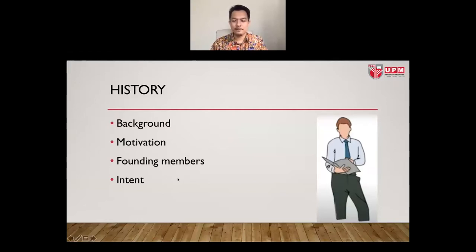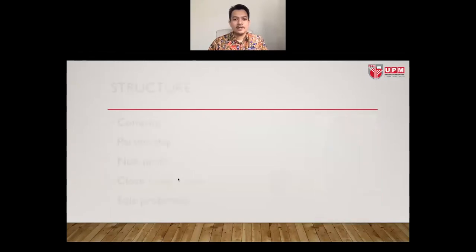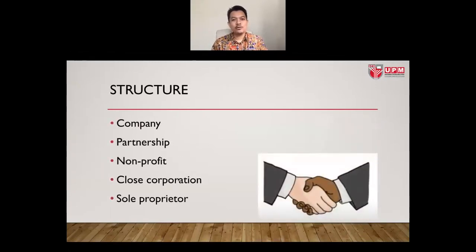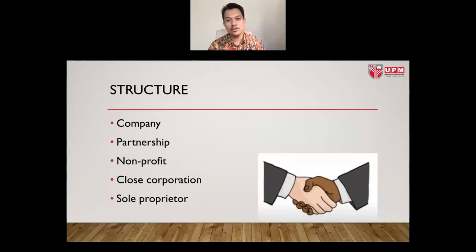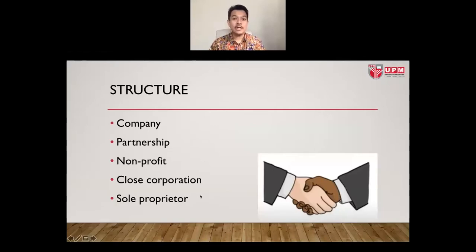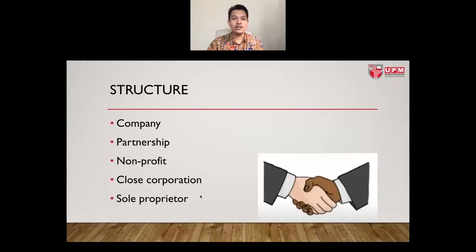Next, you can put the company structure — a simple organization chart. It doesn't have to be the whole chart; if you have two thousand employees, you don't have to put everything — just the key personnel. In terms of company type: is it a partnership, a non-profit, a close corporation, or a sole proprietor? Who owns the company — is it the directors themselves, or is there someone else behind it, such as a foundation?